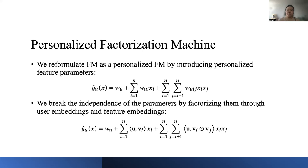Here, the w is the personalized weight of user u. w_i and w_ij reflect the preferences of user u over the first and the second-order feature interactions. Inspired by the factorization machines to save computing and storage costs and also leverage the advantage of collaborative filtering, we break the independence of the parameters by factorizing them through user embedding u and feature embedding v.